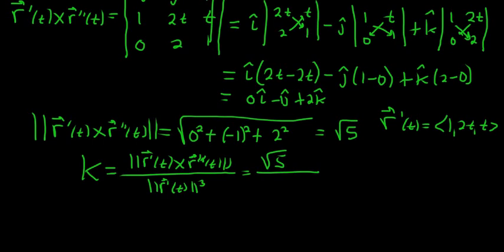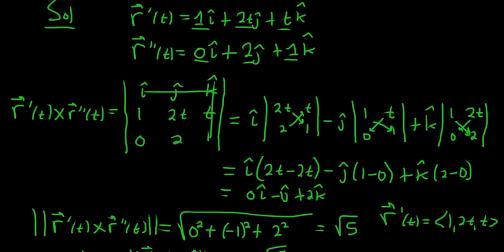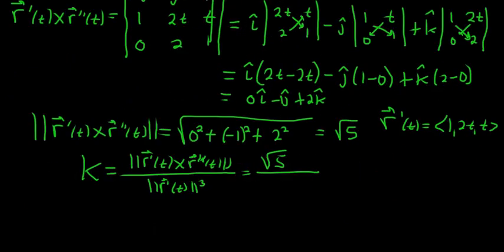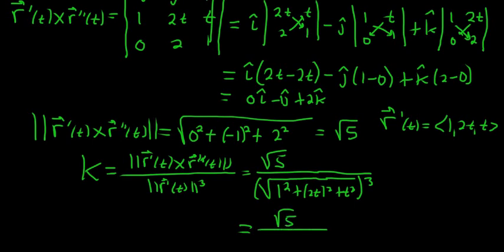So we just take the magnitude of that, and that goes on the bottom. So it's going to be the square root of 1² plus (2t)² plus t², the magnitude is the components squared. And all of that is cubed. So this is equal to the square root of 5 over, so 1 plus 4t² plus t² is 1 plus 5t². So you have the square root of 1 plus 5t² cubed.